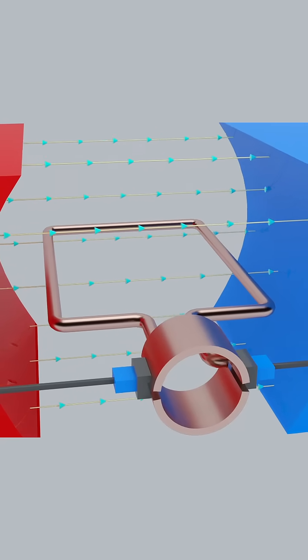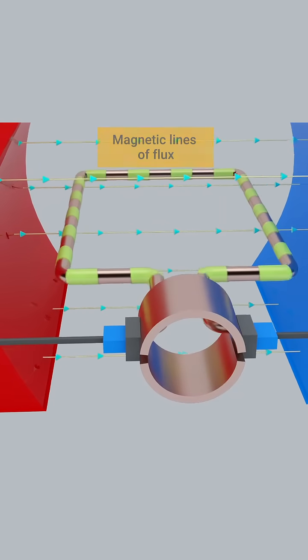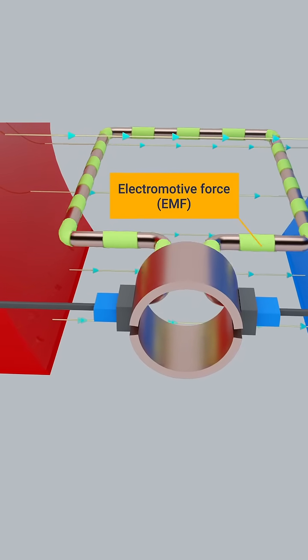As the armature spins, it cuts through the magnetic lines of flux, inducing an electromotive force, EMF, in the coil.